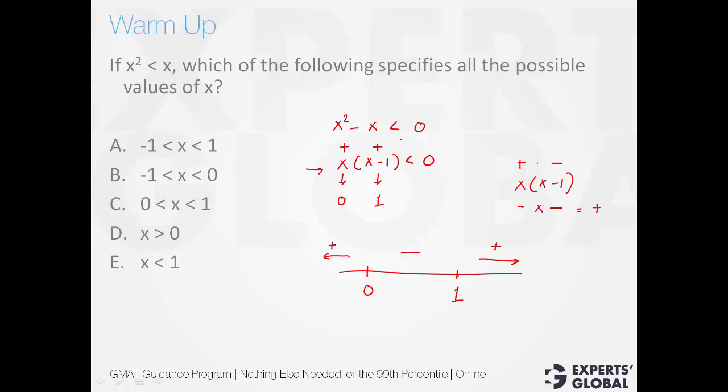The tip is that plot these nodes on the number line. The rightmost value would always be positive, after which you can plot alternate negative and positive values. Coming to this question, we need negative values. The negative value is only here, between 0 and 1, and therefore option C is the right choice.